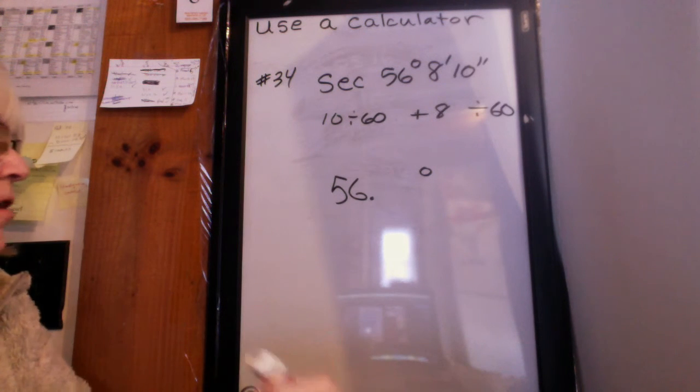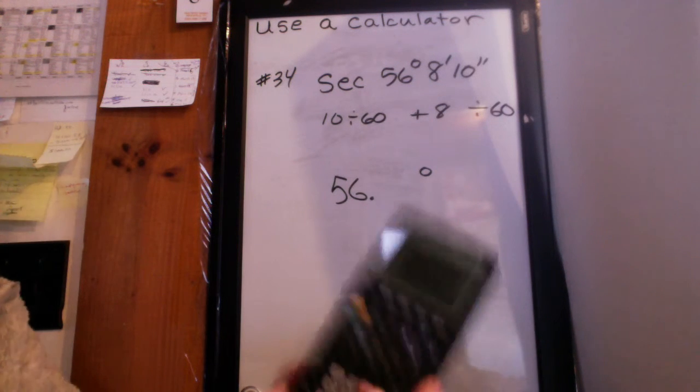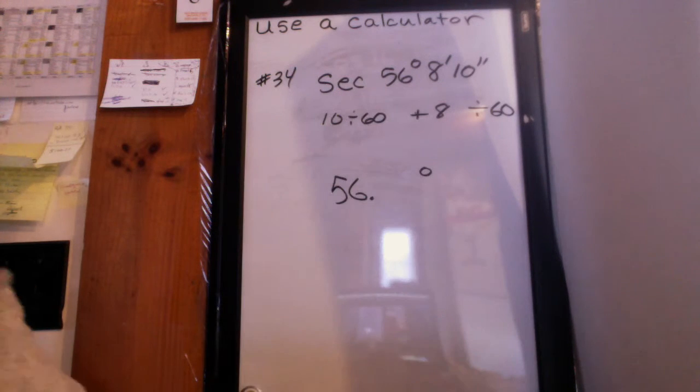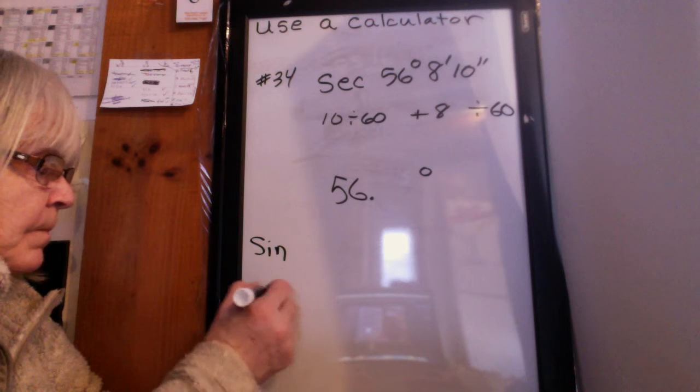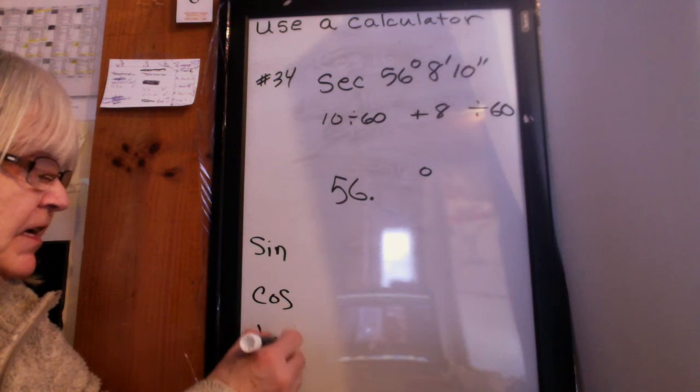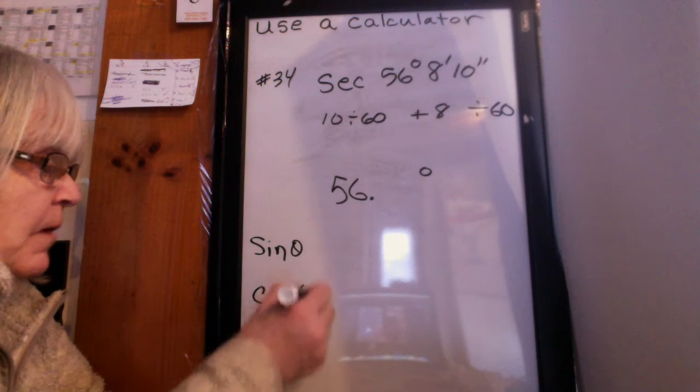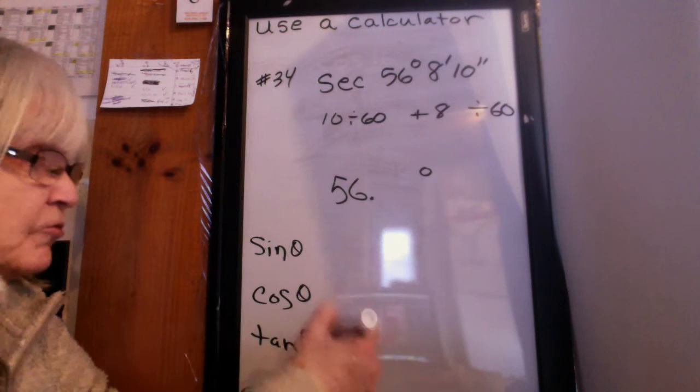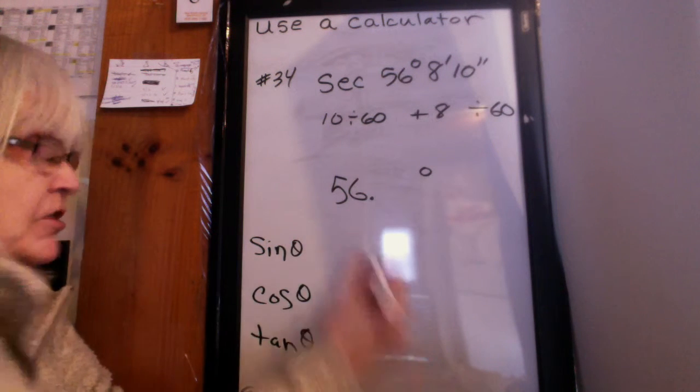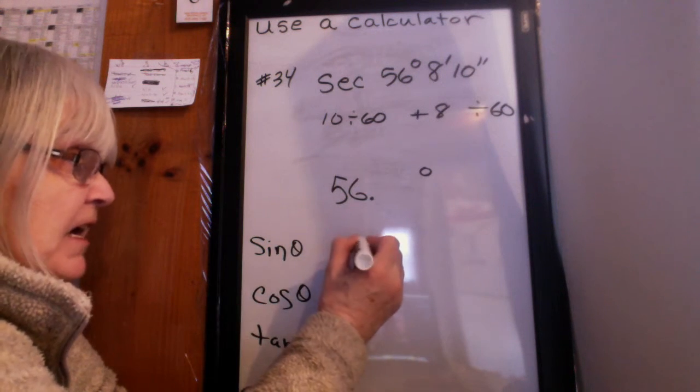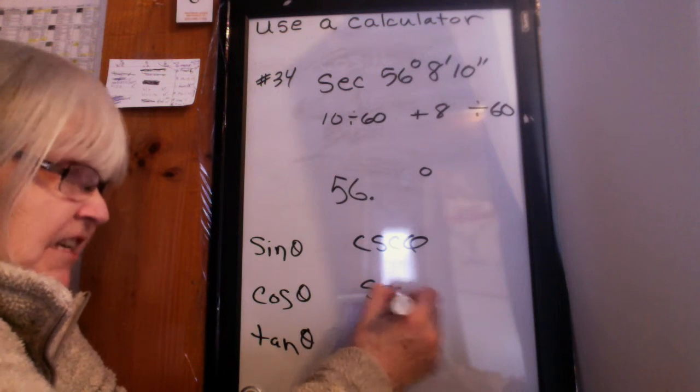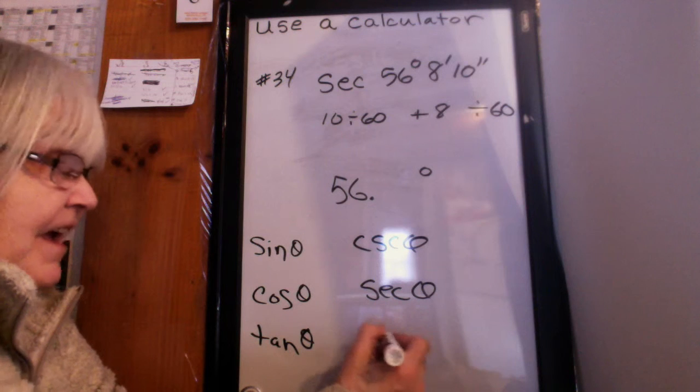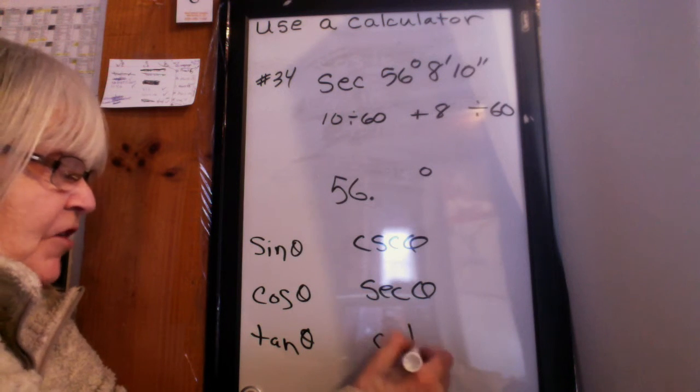And then I'm thinking, oh man, there's no secant button on my calculator. What am I going to do? So on the calculator there's the sine, the cosine, and the tangent. And I don't know if you remember, but when we were doing the six trig functions, I always had you write the partner functions next to them. The partner for sine is cosecant, for cosine is secant, that's a hint, and for tangent is cotangent.